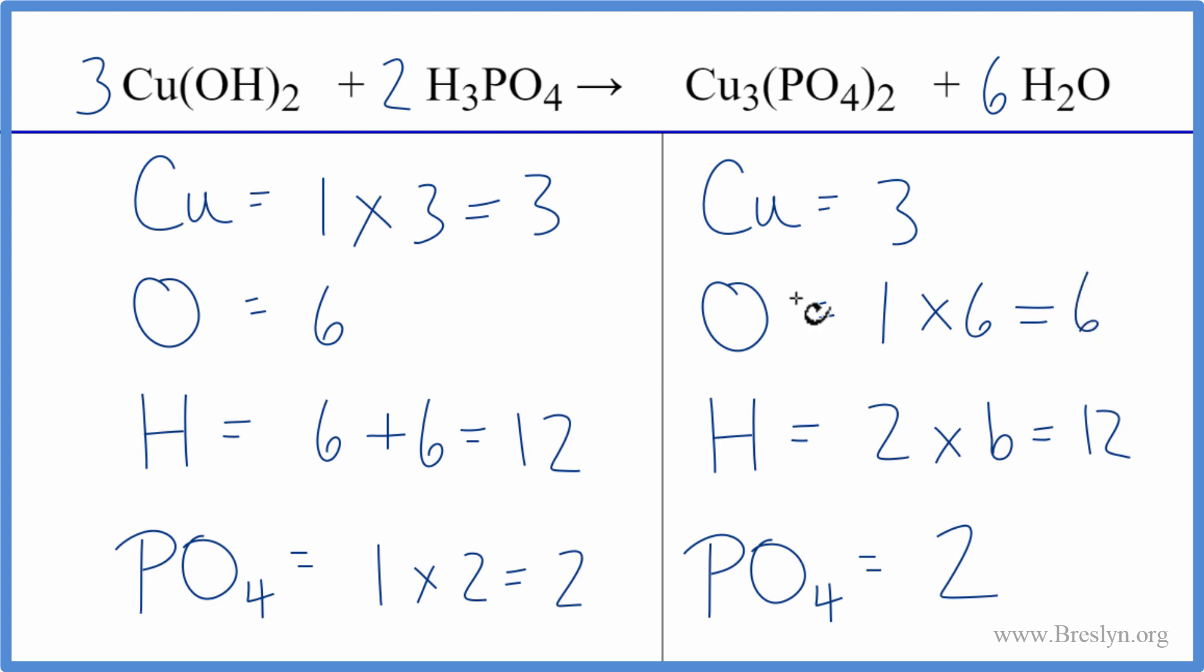So we kind of used two tricks here. One, this phosphate, because it appears on both sides, we just count that as one item, and that makes it a lot easier with these oxygens here. And the other trick, leave the oxygens and hydrogens till last. That's usually a good technique when balancing equations.